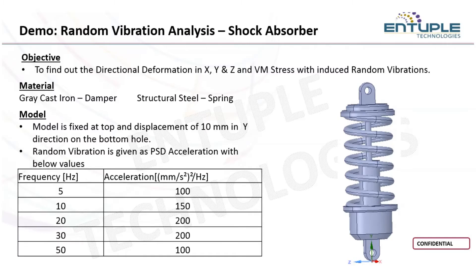The material used is gray cast iron for the entire geometry and model, and just for the spring we have a structural steel assignment. This is an assembly with multiple parts. The boundary conditions are that the model is fixed at the top hole, and a displacement of 10 mm is being given in the positive Y direction on the bottom hole. After that, a random vibration is given in the form of a PSD acceleration with the given values in the chart.